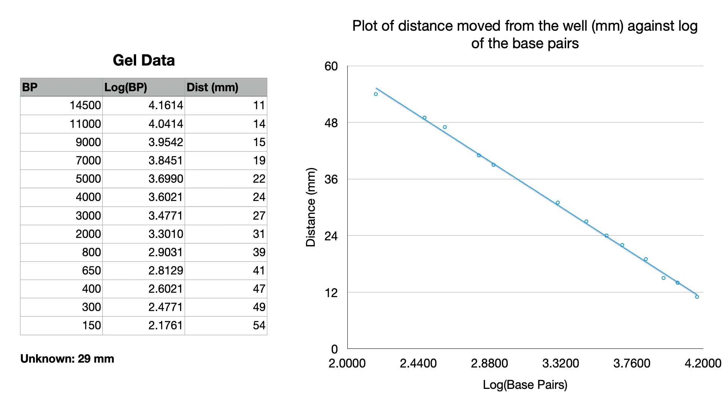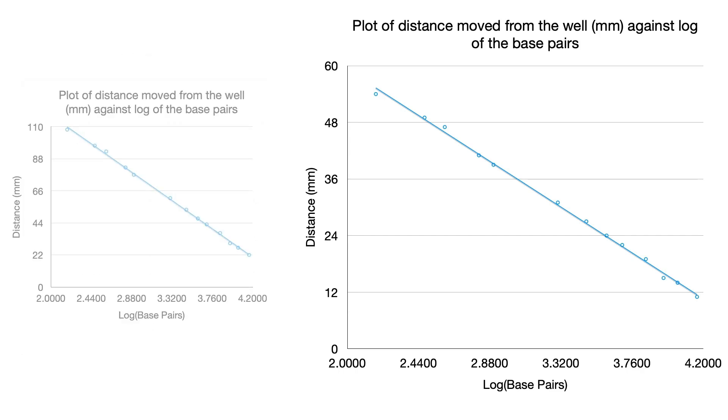So if we plot our data we get a line that looks remarkably similar to the original line that we have. So if we compare the two you can see we've got from 110 on one, 60 on the other, and the lines look very very similar indeed.